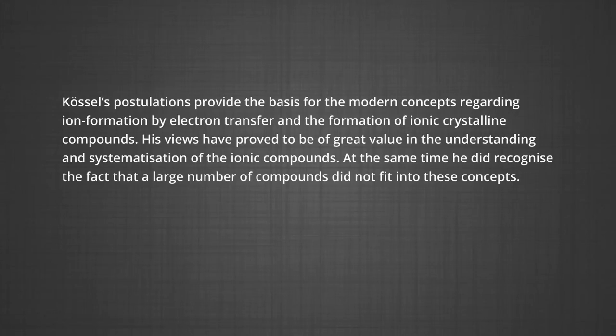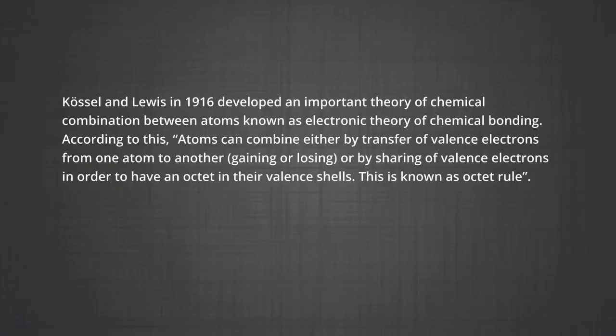Kossel's postulations provided the basis for modern concepts regarding ion formation by electron transfer and the formation of ionic crystalline compounds. However, he did recognize that a large number of compounds did not fit these concepts. Now, the octet rule: Kossel and Lewis in 1916 developed an important theory of chemical combination known as the electronic theory of chemical bonding. According to this, atoms can combine either by transfer of valence electrons from one atom to another, or by sharing of valence electrons, in order to have an octet in their valence shells. This is known as the octet rule.